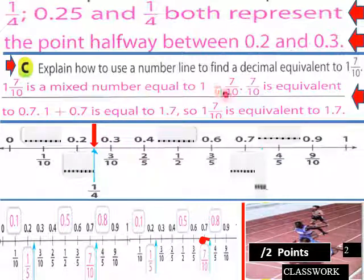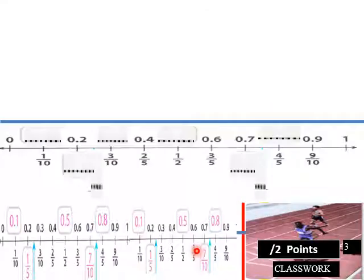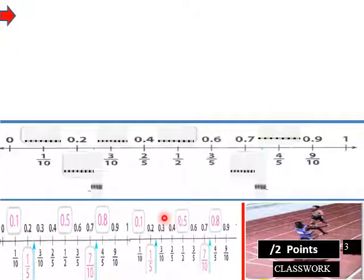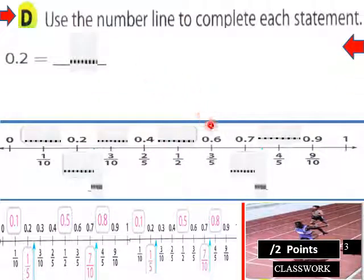One and seven tenths equals one plus seven over ten. Seven over ten is equivalent to 0.7, so it would be one plus 0.7, or 1.7. So one and seven tenths is equivalent to 1.7. Okay, back to our number lines again.